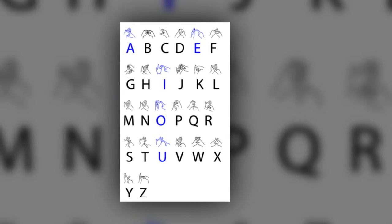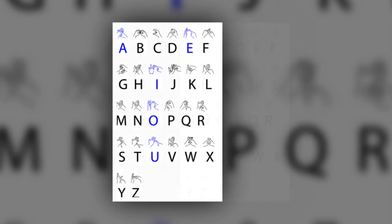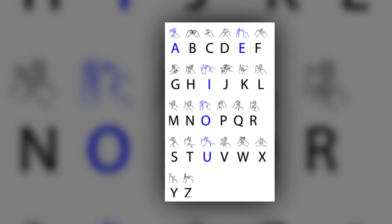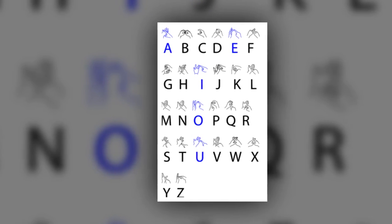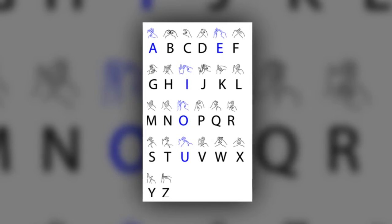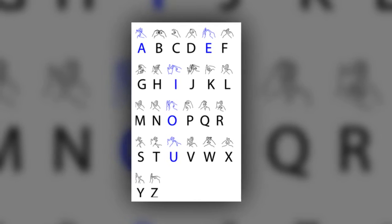To celebrate Braidwood's achievements and mark the first day back to school for many children across the UK, Google has designed a special Google Doodle showing children signing the letters in the company's name. It has also created a video to help anyone learn the British Sign Language alphabet.